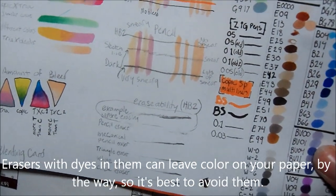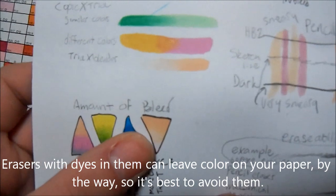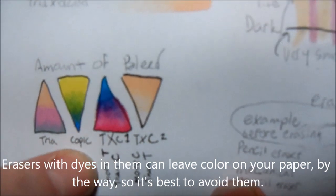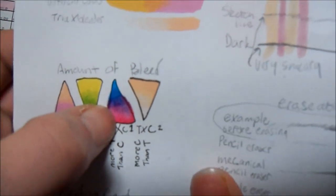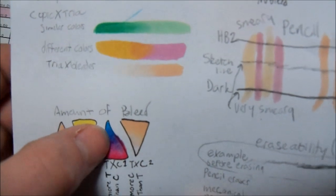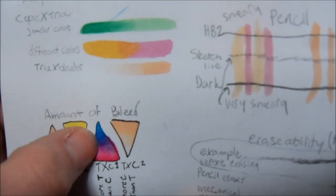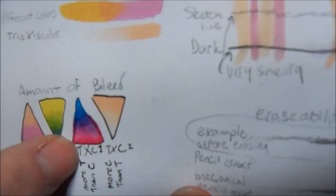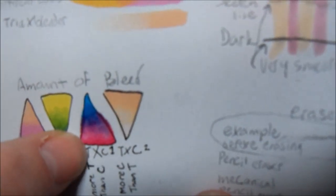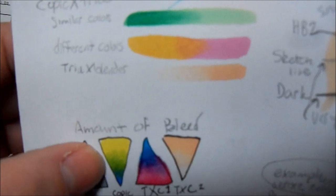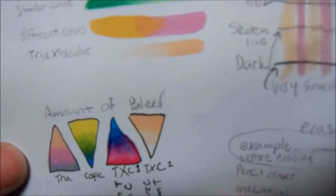Let's see how much it bleeds. Like for instance, this is a mixture of Tria pen and Copic marker. Copic marker is in the blue and Tria is in the pink, and when they blend together they look really nice but they bleed a lot. Trias tend to bleed on this paper more than the Copics do.